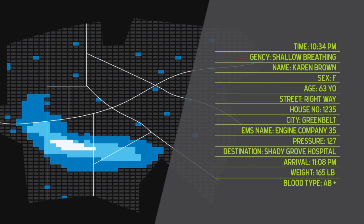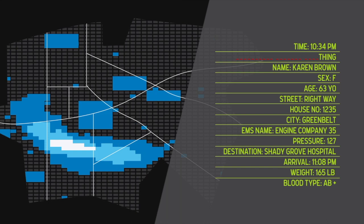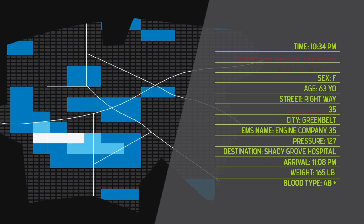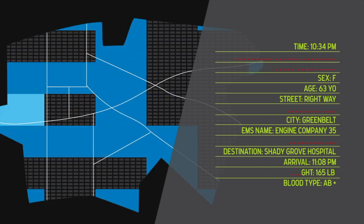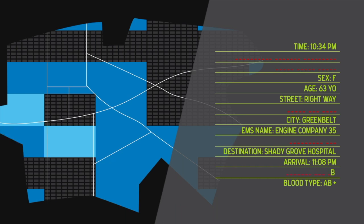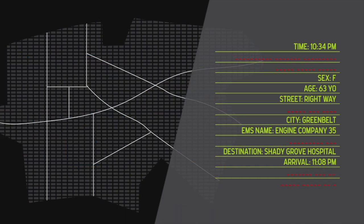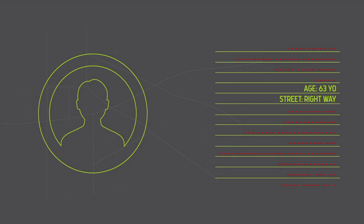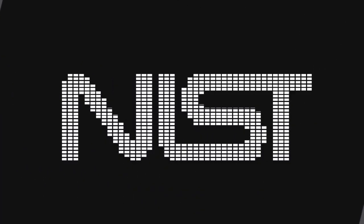Right now, use of data in this way is allowed as long as we redact the personally identifiable information. But by removing PII, we drastically limit the data's usefulness, and we don't always protect identities. For example, if Karen lived on a small street, her identity could easily be revealed just by sharing her age and street name.